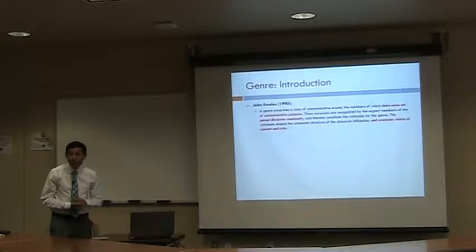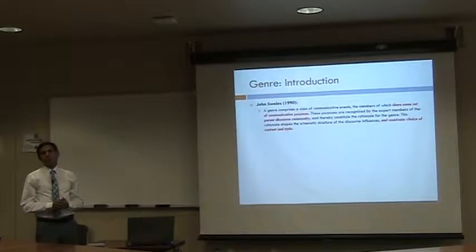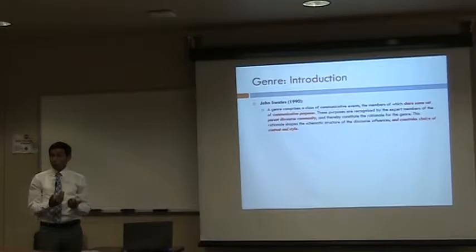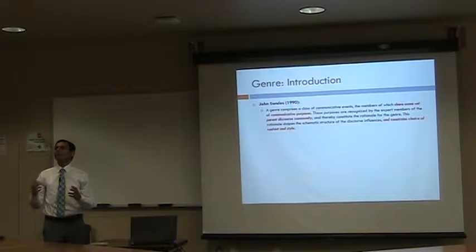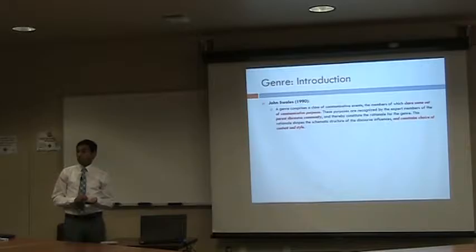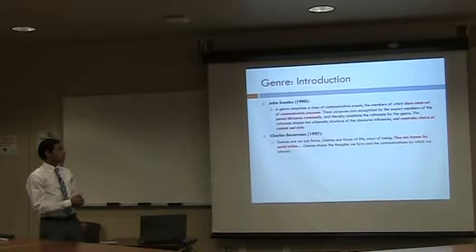This rationale shapes the schematic structure of the discourse and influences and constrains the choice of content and style. The important points in his definition are: first, a set of communicative purposes the writer wants to achieve; second, the concept of the discourse community, which develops conventions over time for these different genre types; and third, the constrained choices of content and style — the lexical and grammatical items or structures found in each genre.